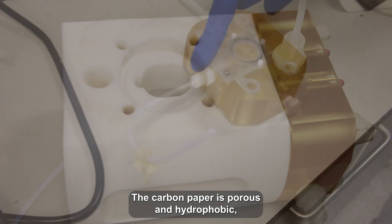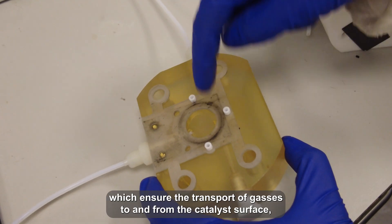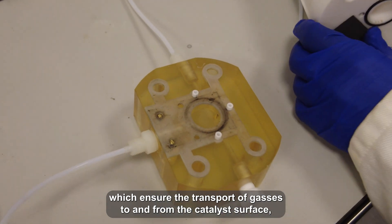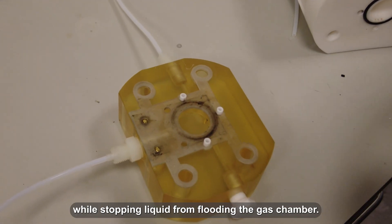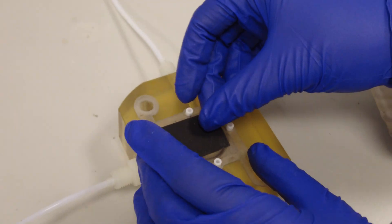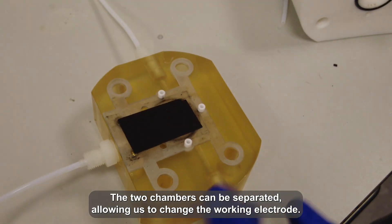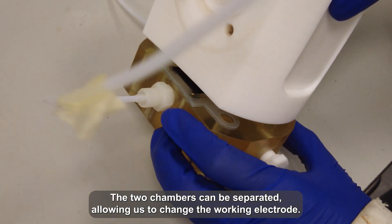The carbon paper is porous and hydrophobic, which ensures transport of gases to and from the catalyst surface while stopping liquid from flooding the gas chamber. The two chambers can be separated, allowing us to change the working electrode.